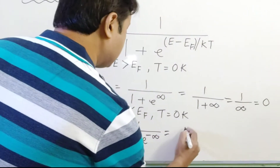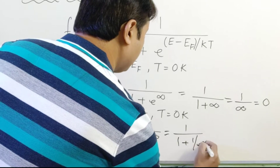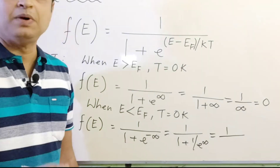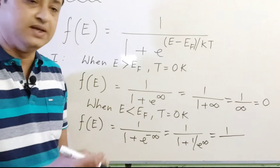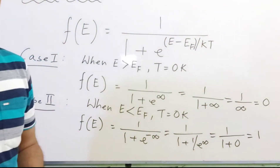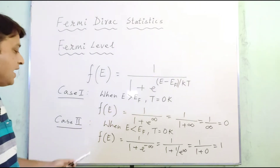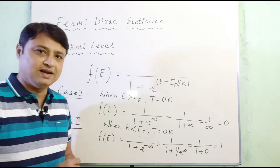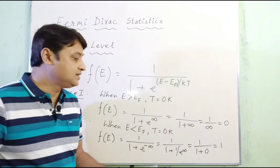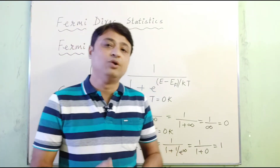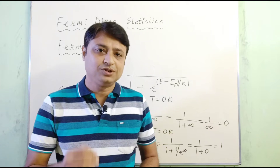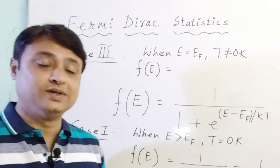We can rewrite e^(−∞) as 1/e^∞ = 1/∞ = 0. So f(E) = 1 / (1 + 0) = 1. Therefore, when E < Ef at T = 0 Kelvin, f(E) = 1. Remember that in statistics, the maximum value is 1 and the minimum value is 0, so the probability of occupancy here is at its maximum.